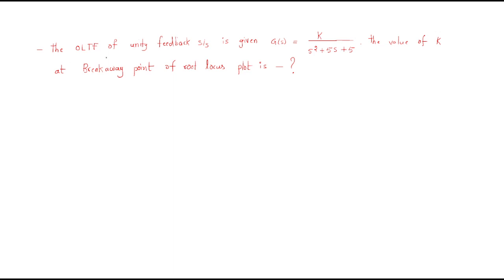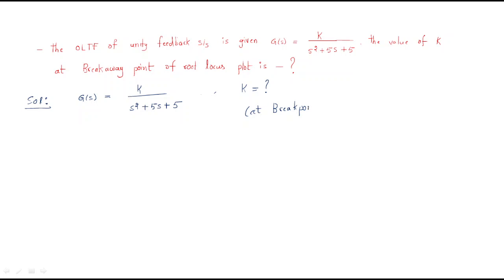Next we discuss another problem. The open loop transfer function of a unity feedback system is G(s) = k / (s² + 5s + 5). We need to find the value of k at the break point of the root locus plot. At the break point, the poles leave the negative real axis.